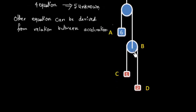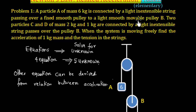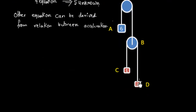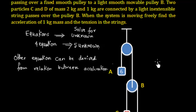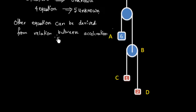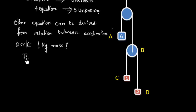Next, two particles C and D of masses 2 kg and 1 kg are connected by a light inextensible string that passes over the pulley B. So we have C of 1 kg and D of 2 kg, and this system passes over pulley B. When the system is moving freely, we have to find the acceleration of the 1 kg mass and the tension in the string.